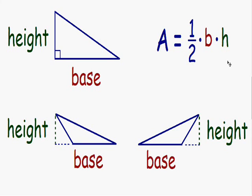Before we get started with an example, I want to talk about how we find our base and our height. I always like to pick the bottom side of the triangle to be my base. If you do that, the height is always going to be the distance between the top of the triangle and the base. Notice how the height has to be vertical — the line has to go up and down. This is an easy example because the right triangle has a left leg that goes straight up and down, so the height is just the distance of this leg.